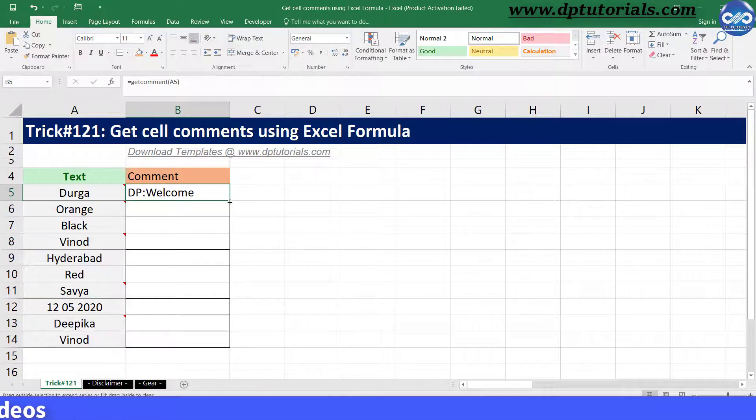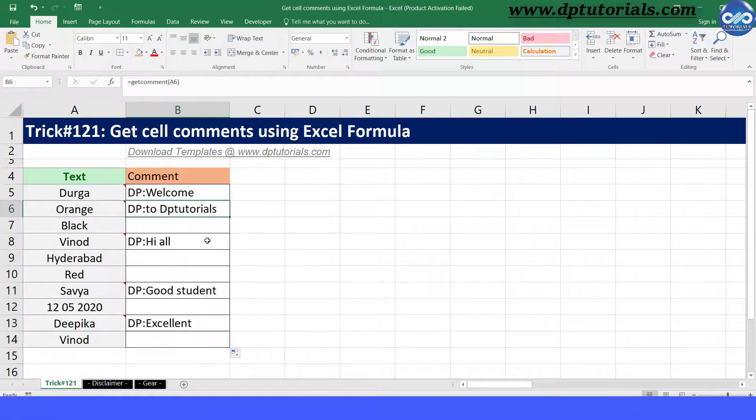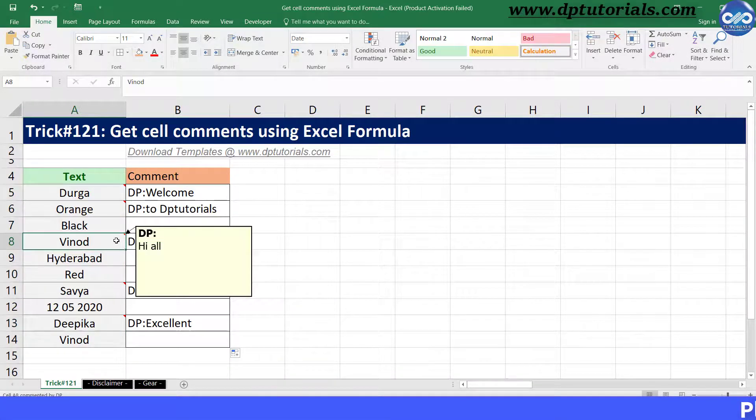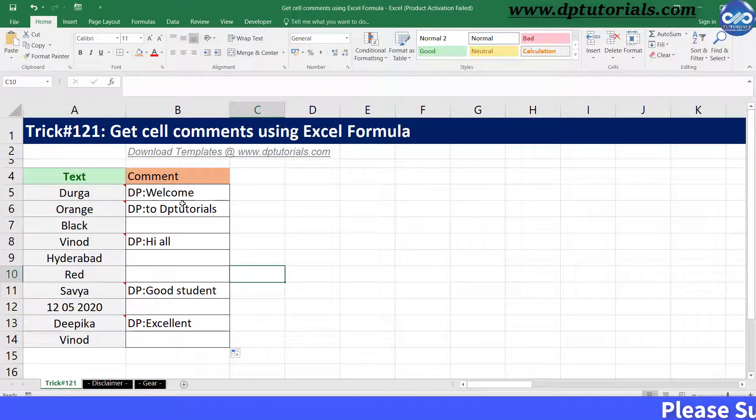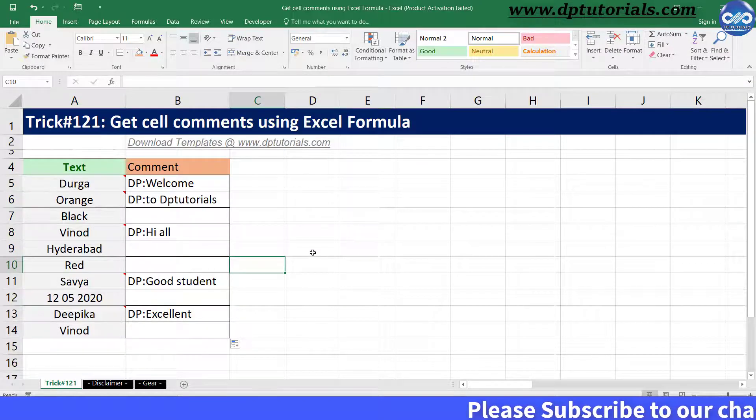Got it? Now drag this formula till the end and you can view all your Excel comments of column A into column B like this. It's very easy and awesome, right?